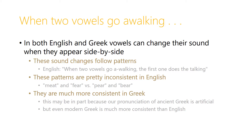In both English and Greek, vowels can change their sound when they appear side by side, and these sound changes follow patterns. So in English, when we're at school learning to read and write, we're often taught the little rhyme: when two vowels go a-walking, the first one does the talking. Now these patterns are pretty inconsistent in English, and so we get differences like the 'ea' in 'meat' versus the 'ea' in 'pear', but they're still consistent enough that they help us when we're first starting out.